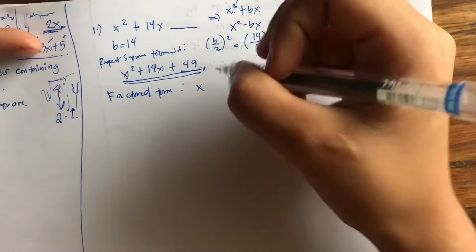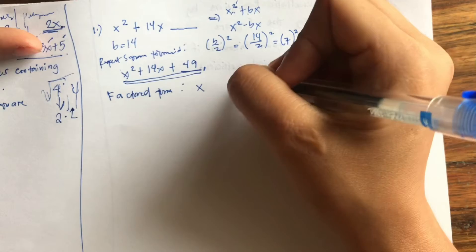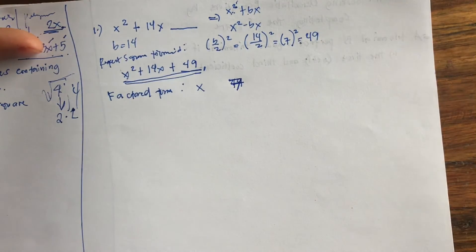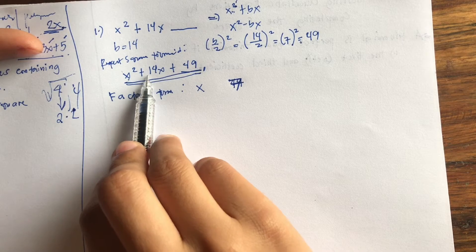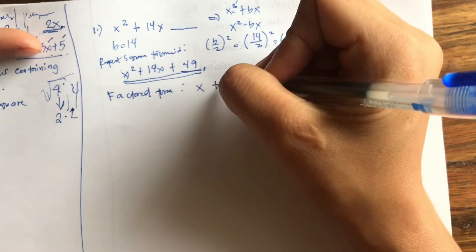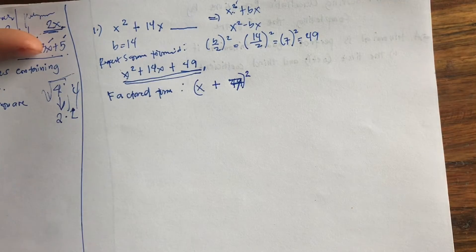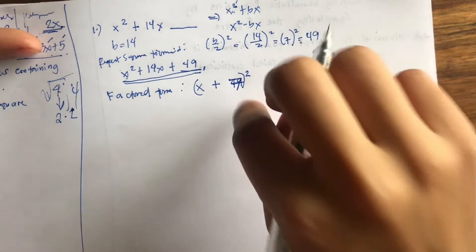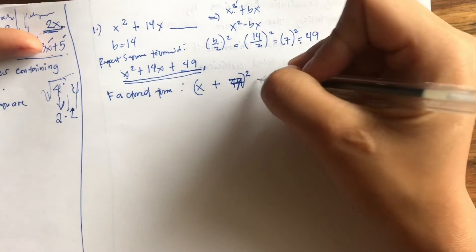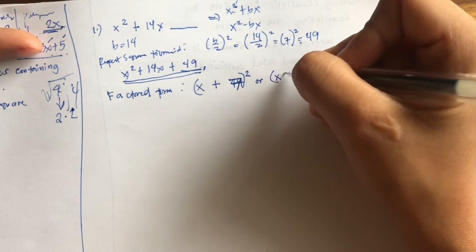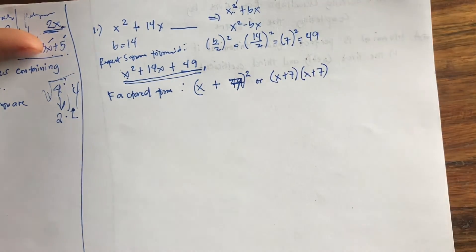So the factored form: the root of the first term is x. The root of our last term, that's 49, the root is 7. Okay, 7 times 7, that is 49. Now the operation of our second term is addition, or plus sign. We simply have to copy that and then square this binomial. Then voila! That is the factor of our perfect square trinomial. It could be in this form, or it could also be x plus 7 times x plus 7.